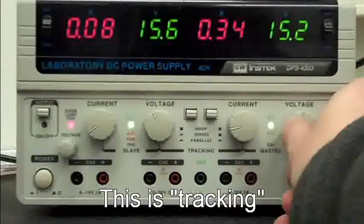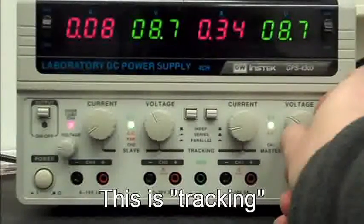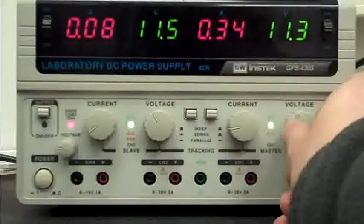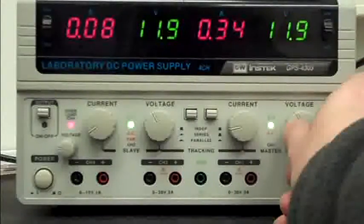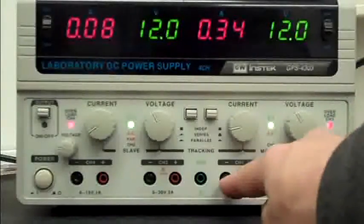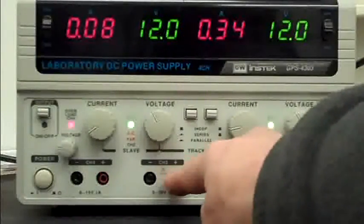Vary this knob, and both channel 1 and channel 2 output potentials change. If I set them both to 12 volts, then we have 12 volts above here and 12 volts below there.